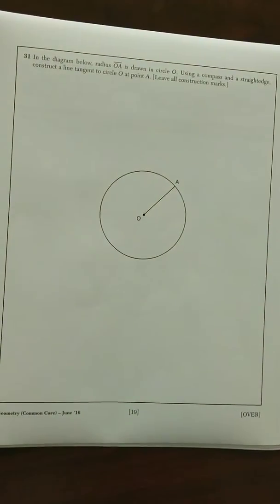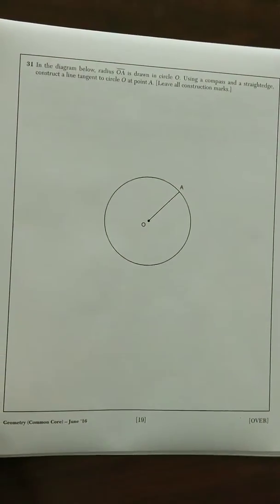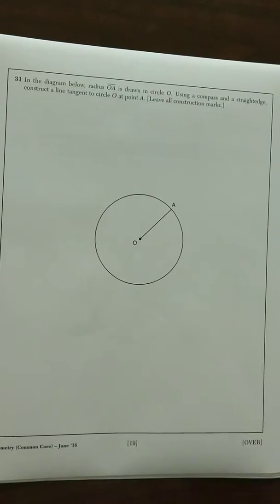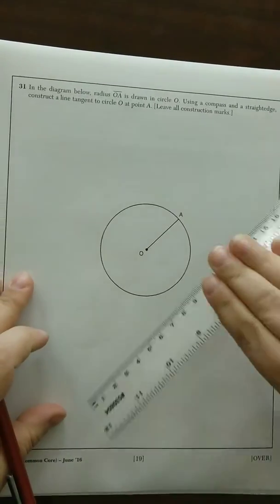To construct a line that's tangent to the circle, remember that a tangent line is a line that intersects the circle at one point.